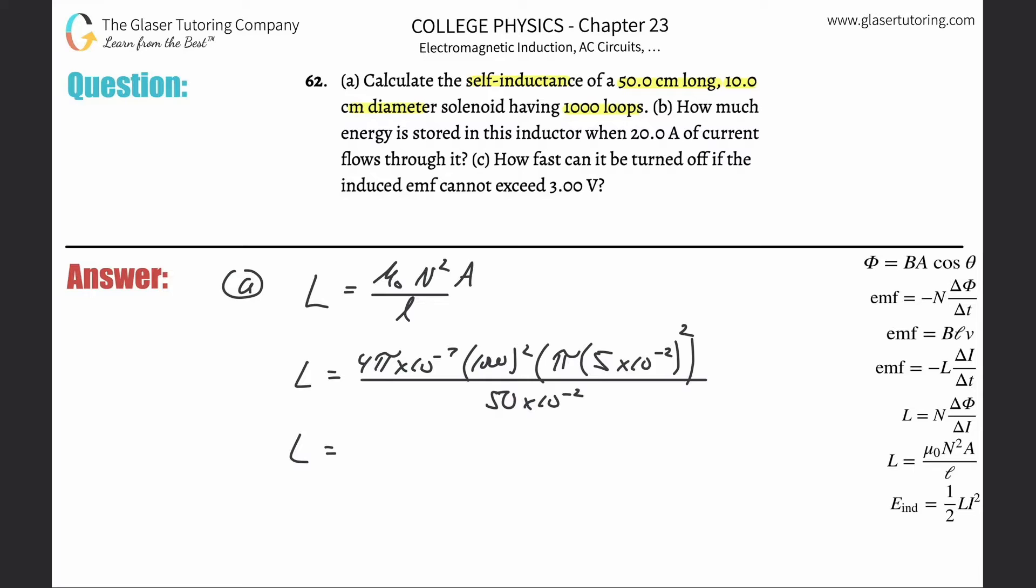Just plug it in. This is going to be 4π times 10 to the minus 7, multiplied by 1000 squared, multiplied then by π times 5 times 10 to the minus 2 squared, all divided by 50 times 10 to the minus 2. We get a value here of about 1.97 times 10 to the minus 2, and that's in terms of henrys.